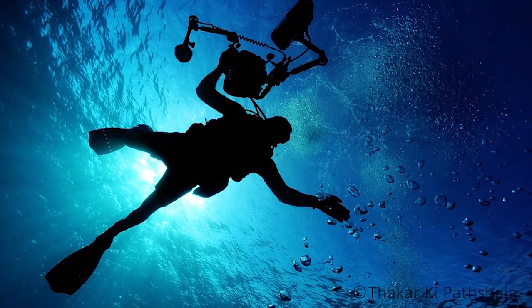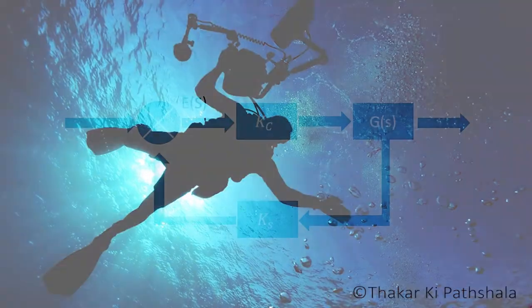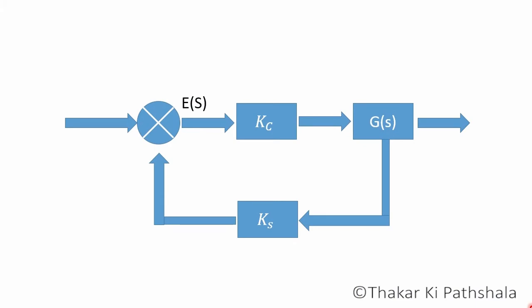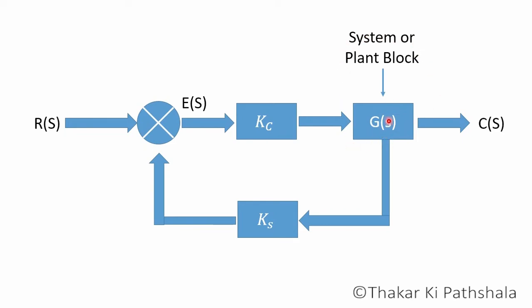To understand steady state error, consider the following simple closed-loop diagram of a control system, in which R(s) is the input and C(s) is the output. This is the system — or plant block — where all the processing is done on the input in order to produce the desired output.